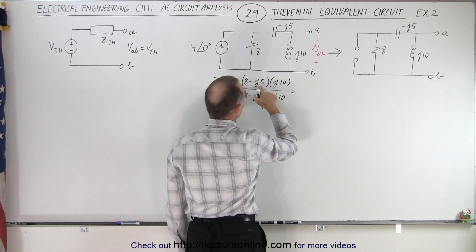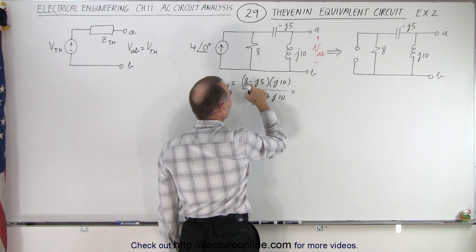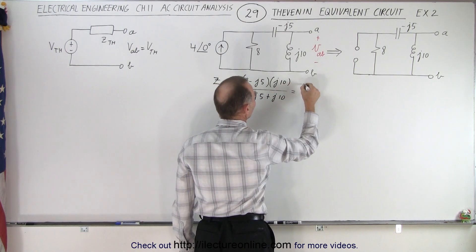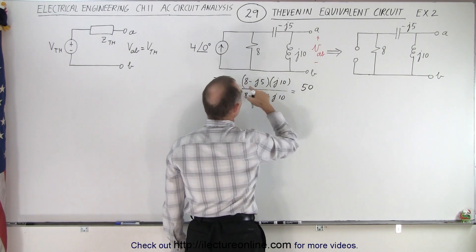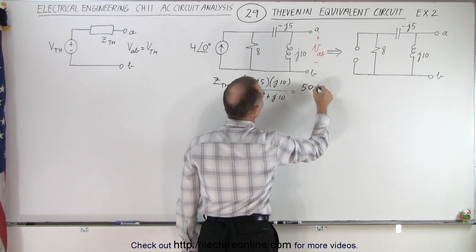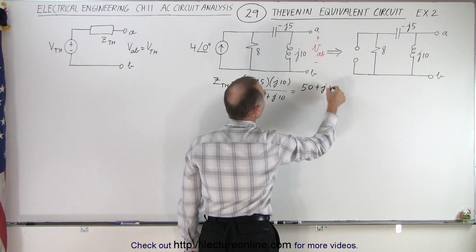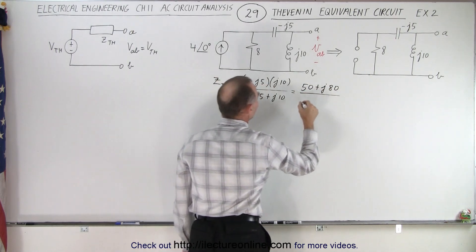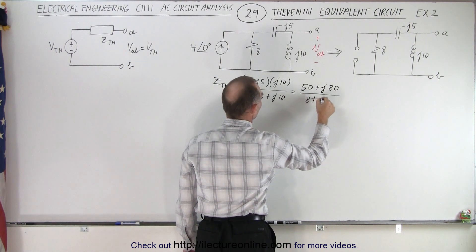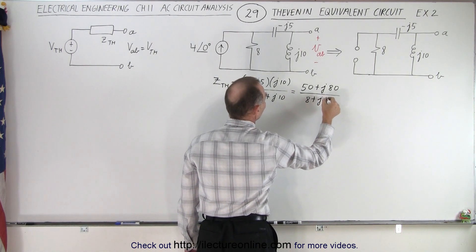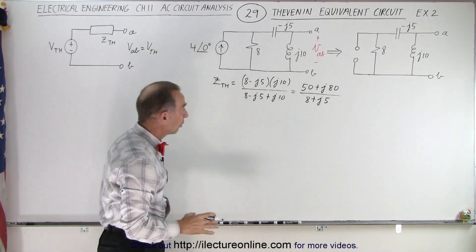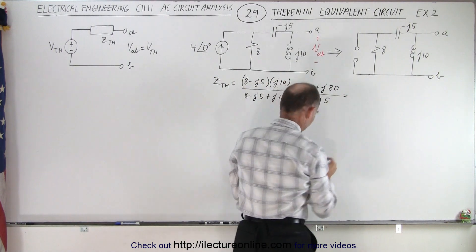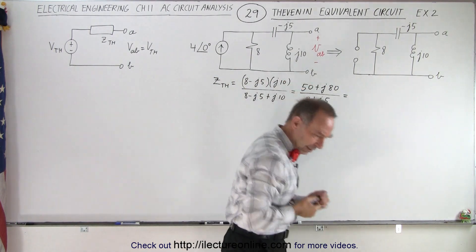This becomes: j times j is minus 1, times the minus gives plus 1, times 50 which is 50. Then we have plus j80 in the numerator, divided by — in the denominator — that becomes 8 plus j5. So now we convert that to magnitude and phase angle format.